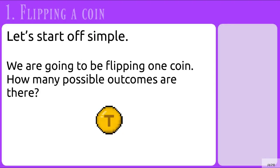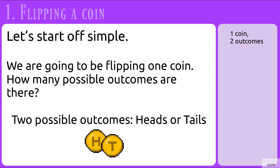Let's start off simple. We are going to be flipping one coin. How many possible outcomes are there? There will be two possible outcomes: either the coin will land on heads, or it will land on tails.